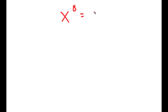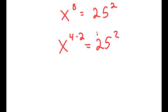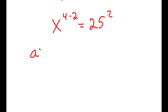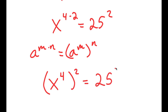All right, so in this video I'm going to solve the equation x to the power of 8 is equal to 25 squared. To solve this, I'm going to first rewrite this as x to the power of 4 times 2 is equal to 25 squared. And if I have something in the form a to the power of m times n, this is equal to a to the power of m to the power of n. So x to the power of 4 times 2 is equal to x to the power of 4 to the power of 2, and this is equal to 25 squared.